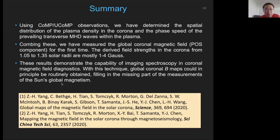So in summary, using CoMP and UCOMP observations, we have determined the spatial distribution of the plasma density in the corona and also the phase speed of these prevailing transverse waves in the plasma. Combining these, we have measured the global coronal magnetic fields for the first time. The derived field strength in the corona from the 1.05 to 1.35 solar radii are mostly 1 to 4 Gauss. These results demonstrate the capability of imaging spectroscopy in coronal magnetic field diagnostics. With this technique and using the upgraded CoMP instrument, global coronal magnetic field maps could in principle be routinely obtained. This will fill in the missing part of the measurements of the sun's global magnetism. Thank you.